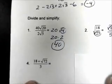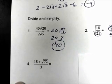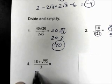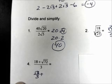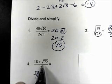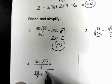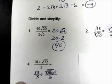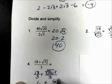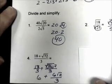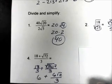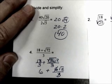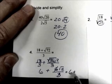Number 4. Here we have 18 plus the square root of 72 divided by 3. Each term of the numerator is being divided by 3, so let's split this up: 18 divided by 3 plus the square root of 72 divided by 3. The square root of 72 can be simplified — write this as 36 times 2, and the square root of 36 is 6. So we have 6 plus 6 square root of 2 divided by 3. The 6 and the 3 reduce, so our final answer is 6 plus 2 square root of 2.